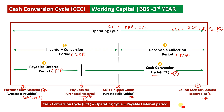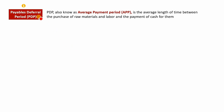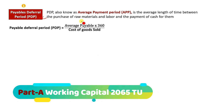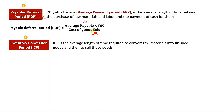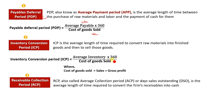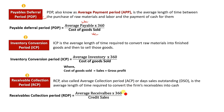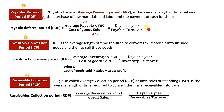So: Cash Conversion Cycle = Operating Cycle minus Payable Deferral Period, or Inventory Conversion Period plus Receivable Collection Period minus Payable Deferral Period. The formula for Payable Deferral Period is: Average Payable multiplied by 360 divided by Cost of Goods Sold. The formulas for PDP, ICP, and RCP use payable turnover, inventory turnover, and receivable turnover respectively — days in the year divided by the respective turnover.